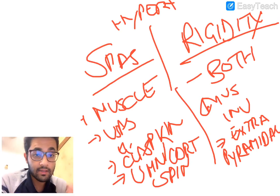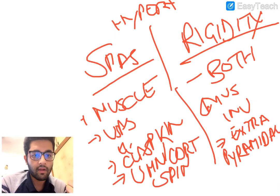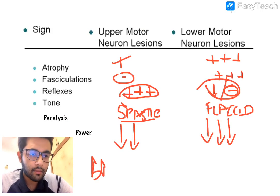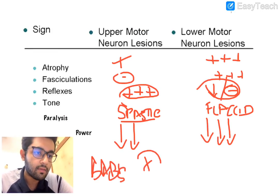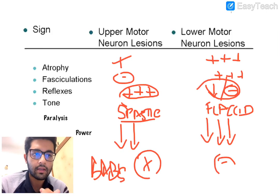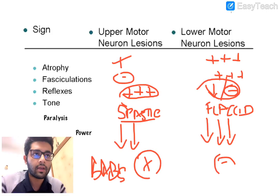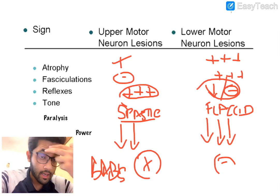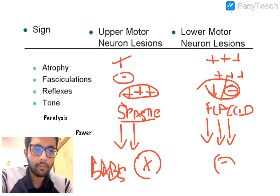Rigidity — whether lead-pipe or cogwheel — involves both complementary muscle groups and is classically seen in extrapyramidal lesions like Parkinson's disease. One more frequently asked point: Babinski sign is positive in UMN lesions and negative in LMN lesions. Remember these points — they are asked in any CNS case, whether stroke or otherwise.